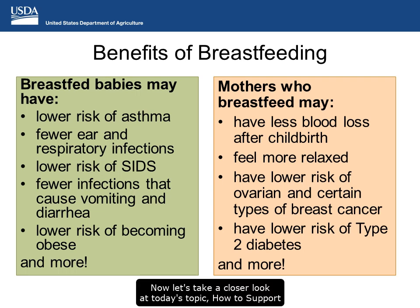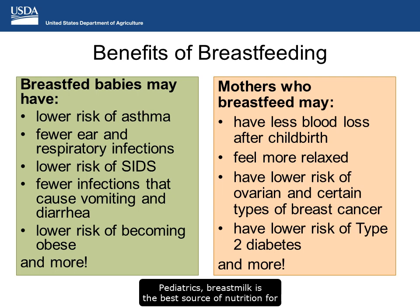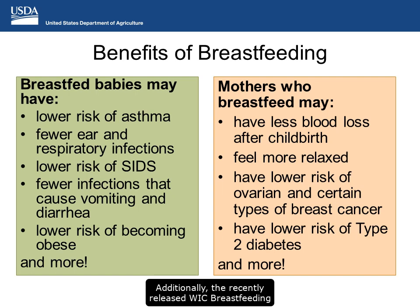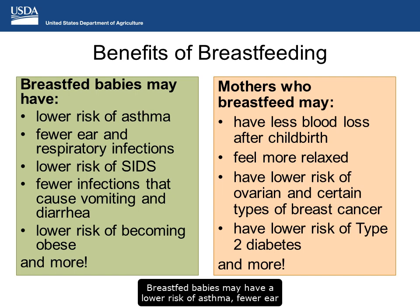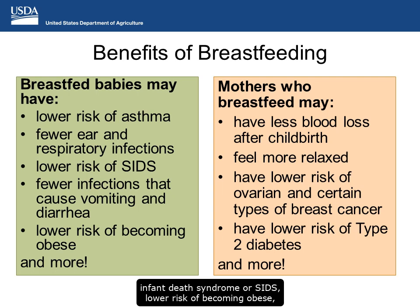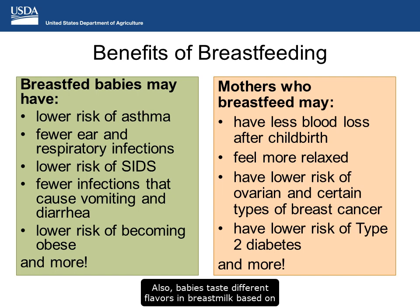Now let's take a closer look at today's topic: how to support breastfeeding in the CACFP. According to the American Academy of Pediatrics, breast milk is the best source of nutrition for babies and is the only food healthy babies need for about the first six months of life. The recently released WIC breastfeeding campaign encourages breastfeeding mothers to breastfeed as much as they can for as long as they can — exclusively for six months and up to a year if possible. Breastfed babies may have a lower risk of asthma, fewer ear and lower respiratory infections, lower risk of SIDS, lower risk of becoming obese, and fewer infections that cause vomiting and diarrhea. Babies also taste different flavors in breast milk based on what the mother eats, which may help babies accept new flavors from solid foods more easily.